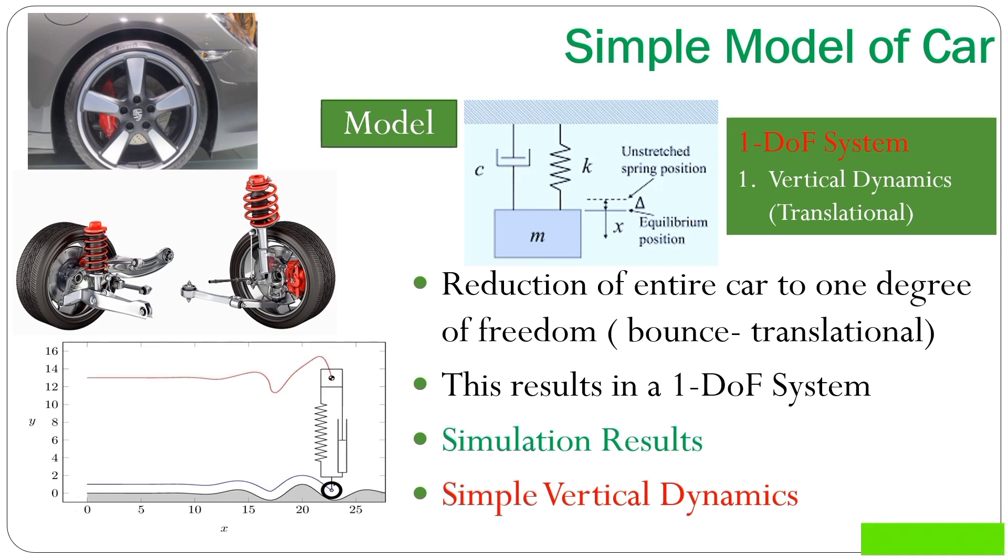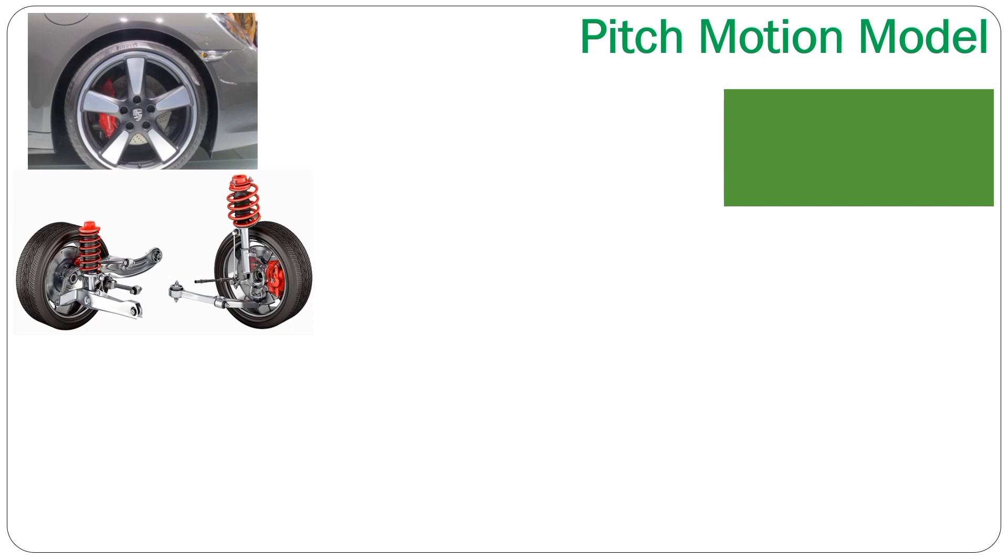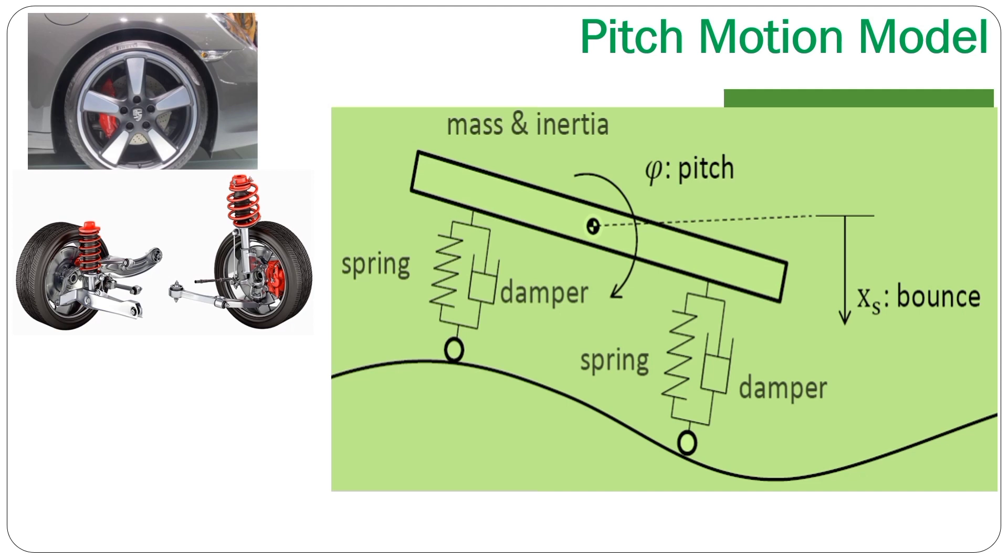We may further ask the important questions: Are there any other possibilities to see the problem in more detail and have more refined models or are we ignoring something important in this model? Of course, there is another possibility. For example, to model the pitch behavior and the basic question again is how to model the pitch motion of a car.